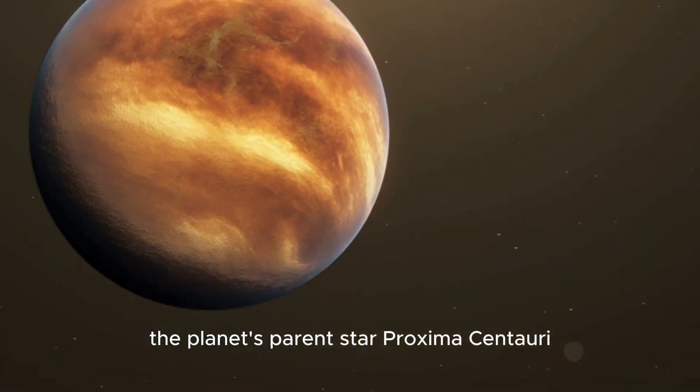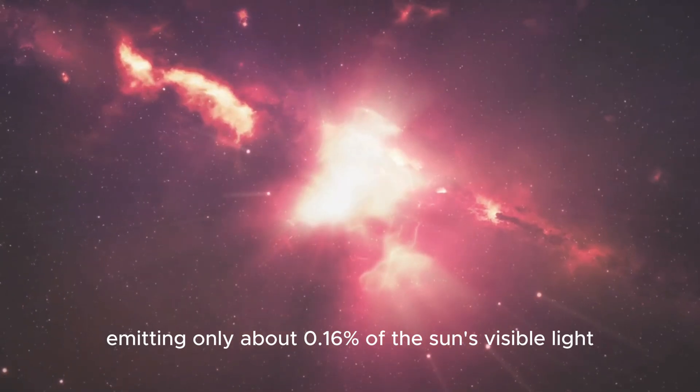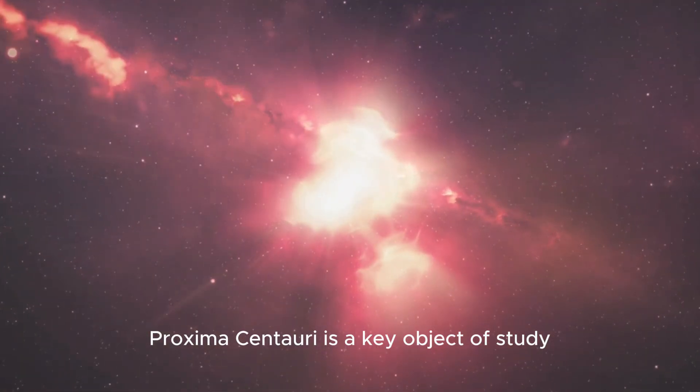The planet's parent star, Proxima Centauri, is part of a triple star system known as Alpha Centauri. Despite its low luminosity, emitting only about 0.16% of the sun's visible light, Proxima Centauri is a key object of study for astronomers.